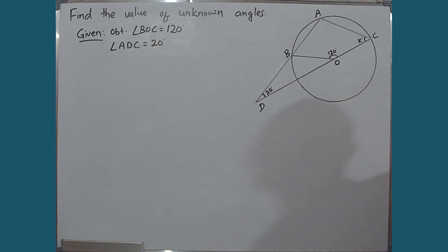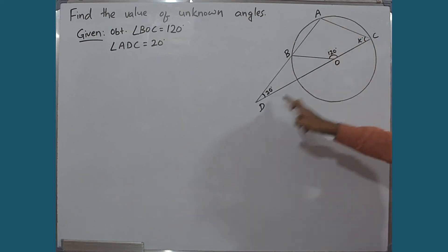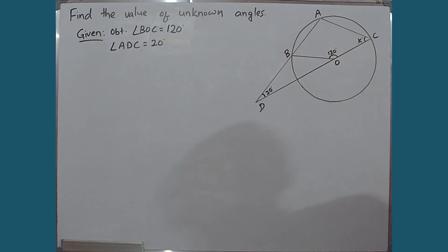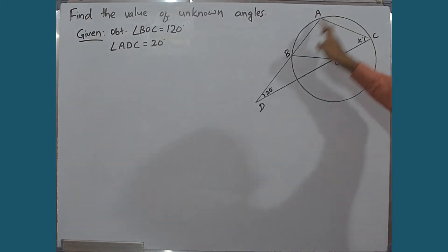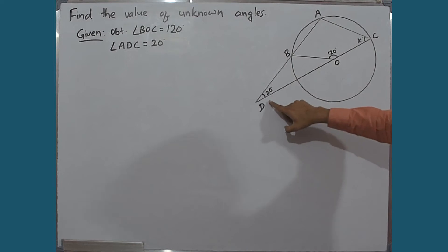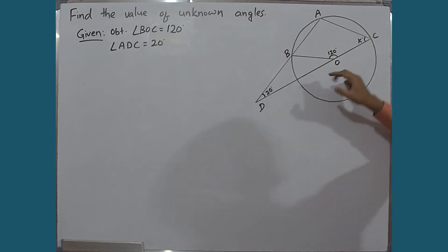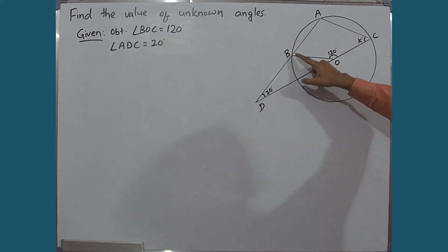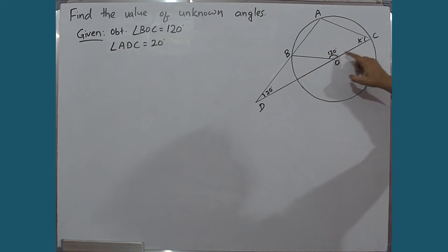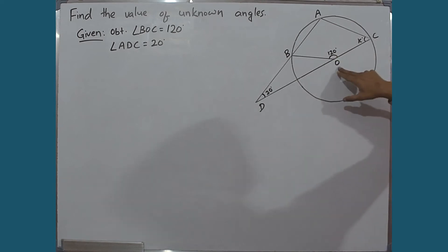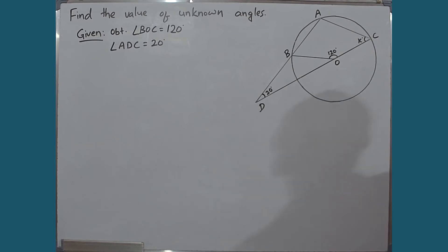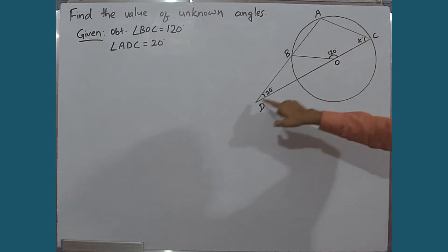We need to find angle ACD, which is X. Angle ADC is equal to 20 degrees. The central obtuse angle BOC is equal to 120 degrees. O is the center of the circle.